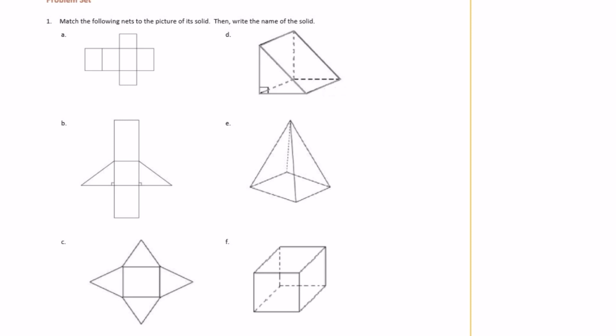We have three different nets that we need to match to the three prisms. The first one, A — I noticed that it has rectangles, four rectangles. These four rectangles would fold up and then these two sides would kind of flap up on the sides, making a rectangular prism. The other two have triangles and this one doesn't have any triangles.